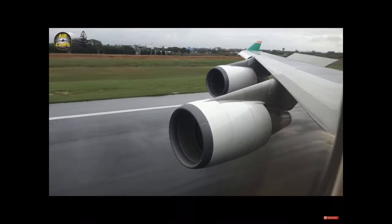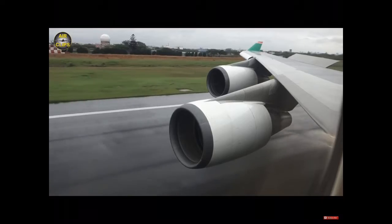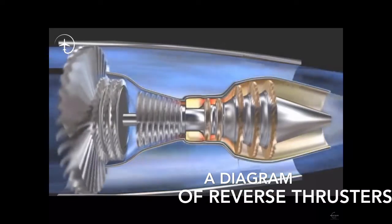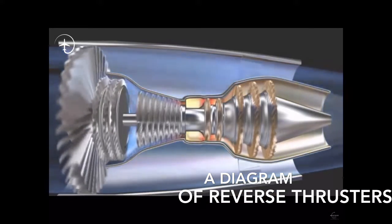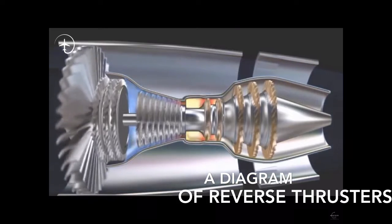If circumstances require it, the reverse thrust can be used all the way to a stop, or even to push the aircraft backwards — though air tugs or tow bars are commonly used for that purpose. When reverse thrust is used to push an aircraft from the gate, that maneuver is called a power back.